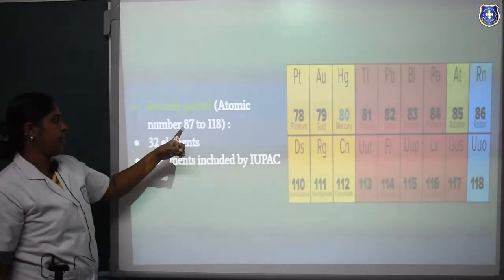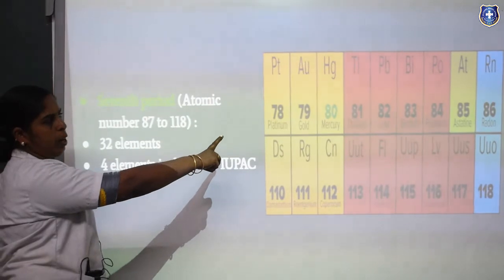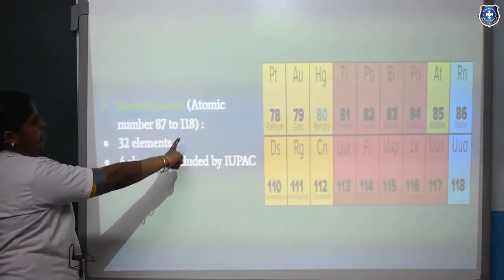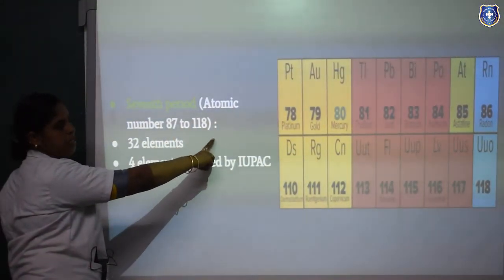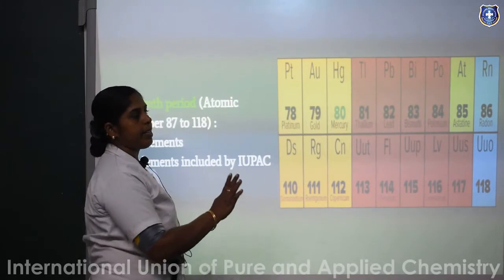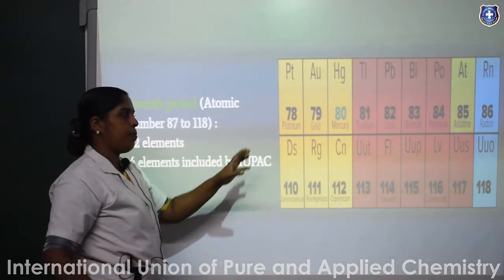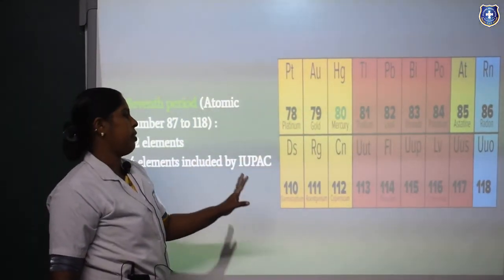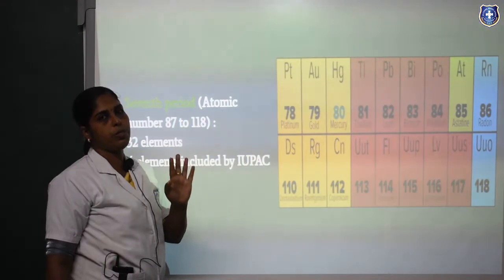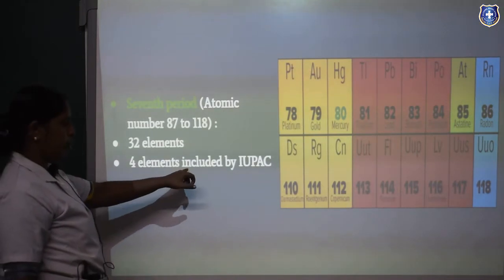The 7th period contains 32 elements and is the longest period. The atomic numbers go from 87 to 118. Our modern periodic table contains totally 118 elements, authenticated by IUPAC. Currently 4 new elements have been included by IUPAC.